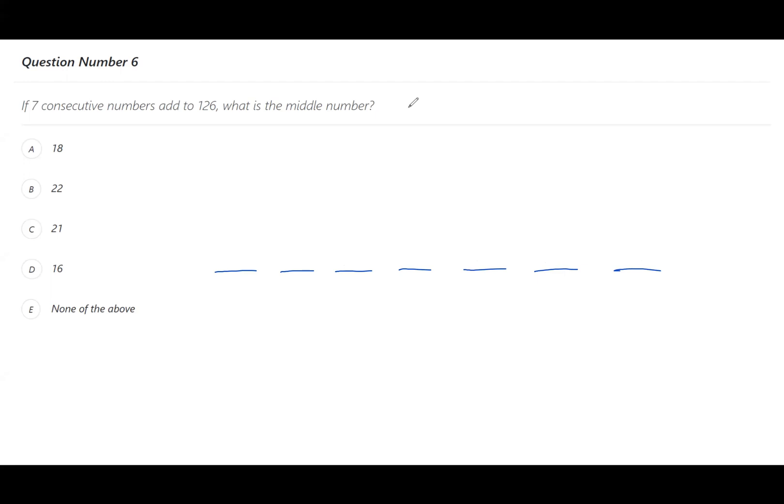The trick to these questions is just to take the bigger number and divide it by the smaller number and see how many times the seven go into 126. So if you do 126 and you divide that by seven, you get 18.